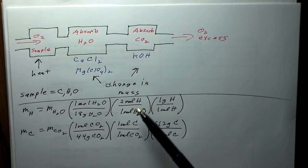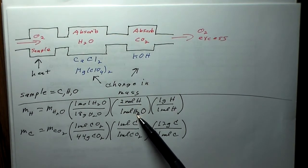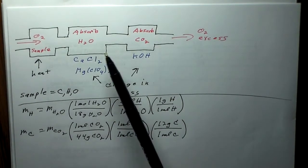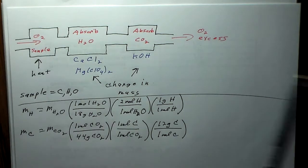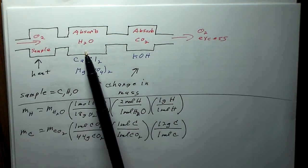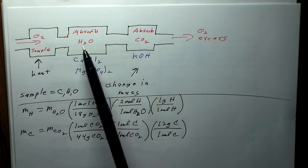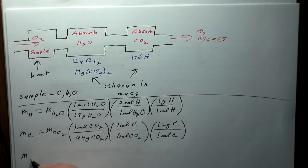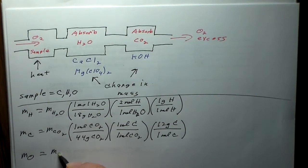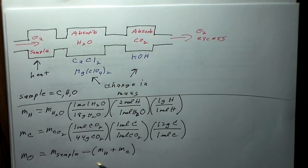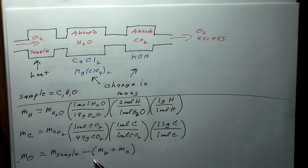For oxygen, we can't determine it just by mass change, because excess oxygen is coming into the system and we don't know how much is actually reacting from the sample versus from outside. So instead we simply use the difference: the mass of oxygen equals the mass of the sample minus the sum of the mass of hydrogen plus the mass of carbon. Since the sample only contains carbon, hydrogen, and oxygen, those three masses must add up to the sample mass.